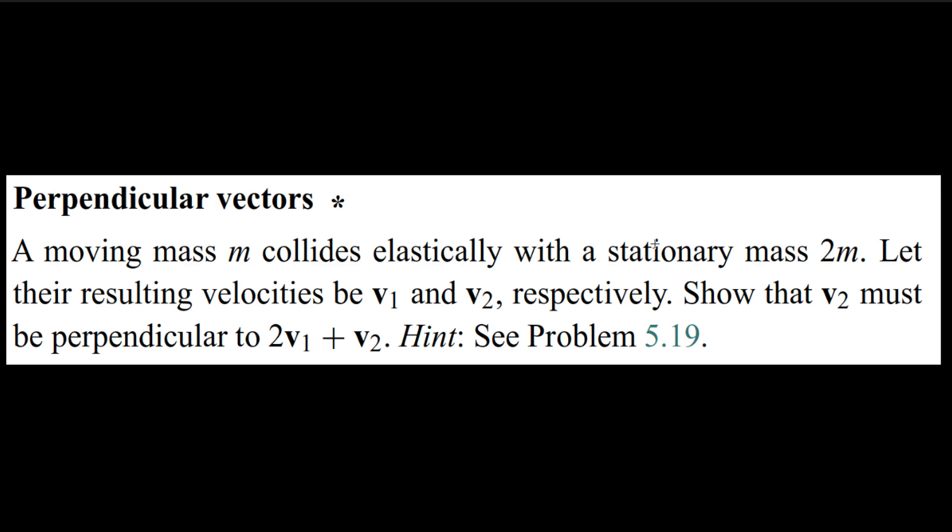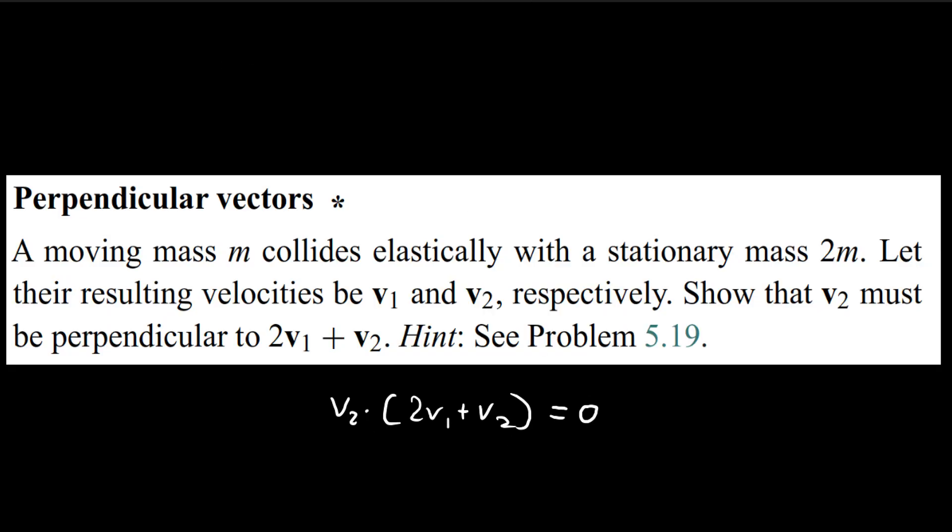In this problem, we have a collision between two masses, and then the resulting velocity is v1 and v2. We need to show that v2 must be perpendicular to 2v1 plus v2. That claim is equivalent to proving that the dot product between v2 and 2v1 plus v2 is equal to 0. Remember that both of these expressions are vectors, so all we have to do is just to prove this dot product here.